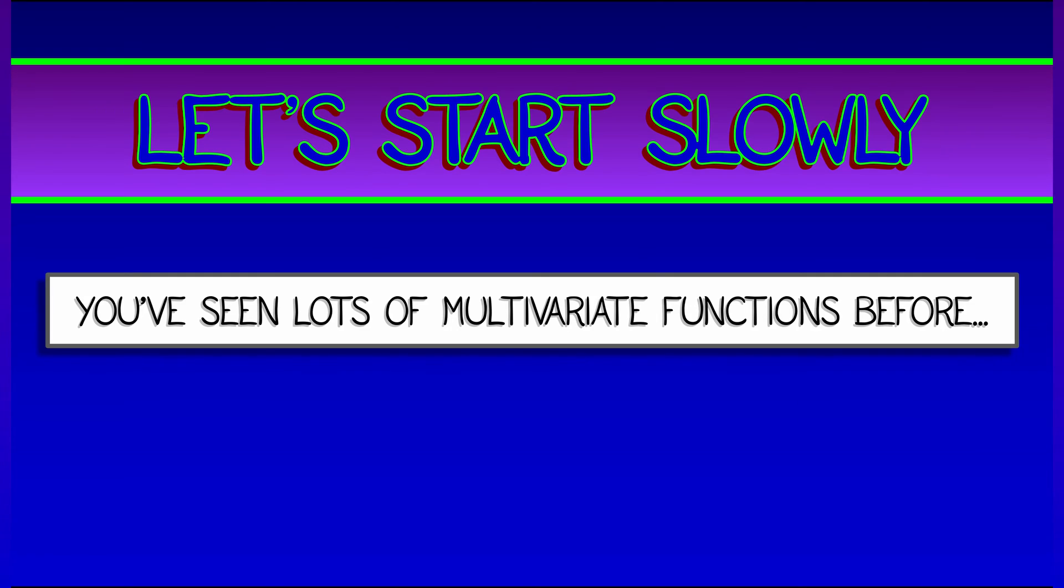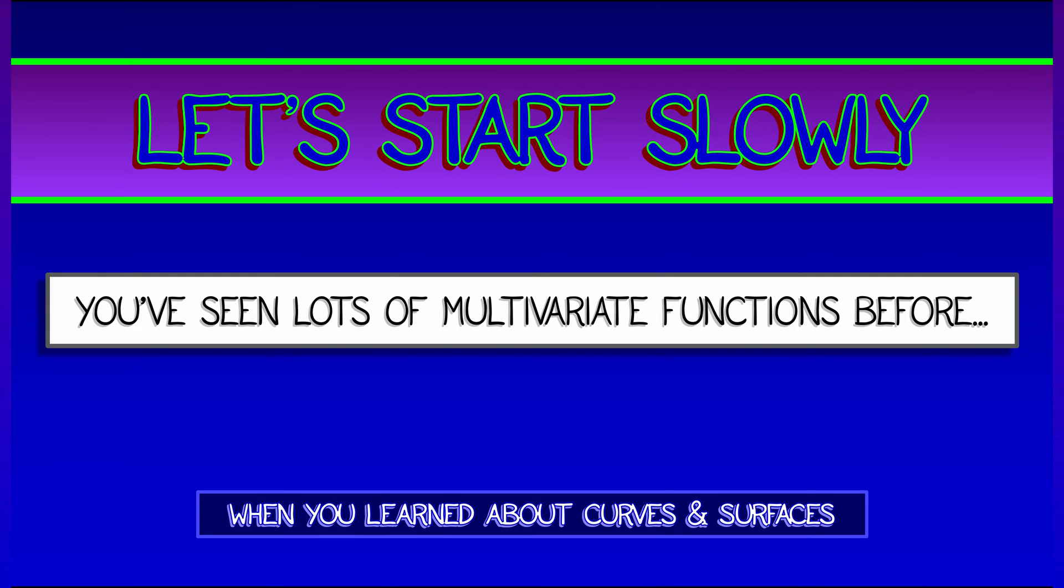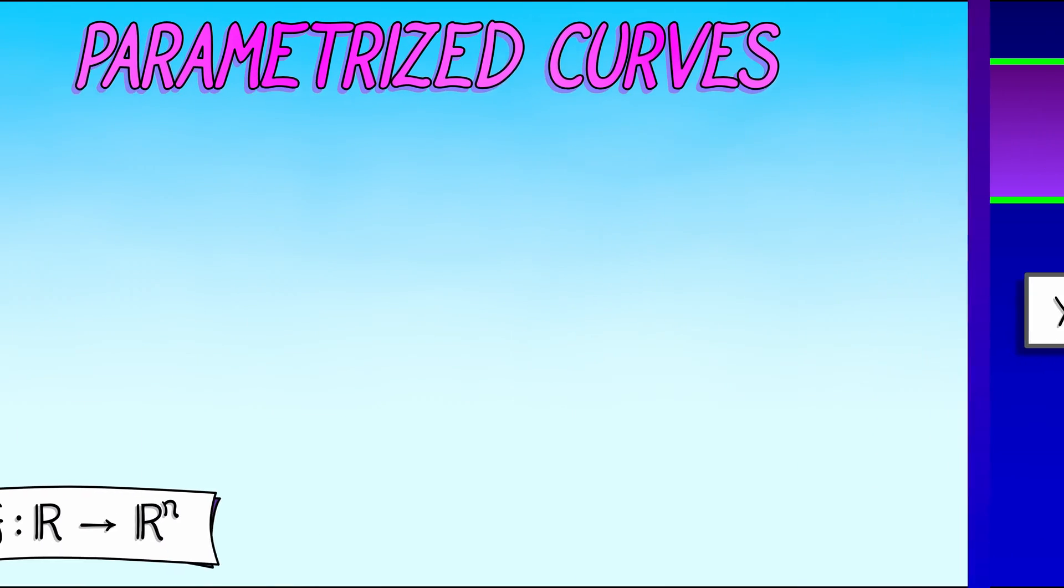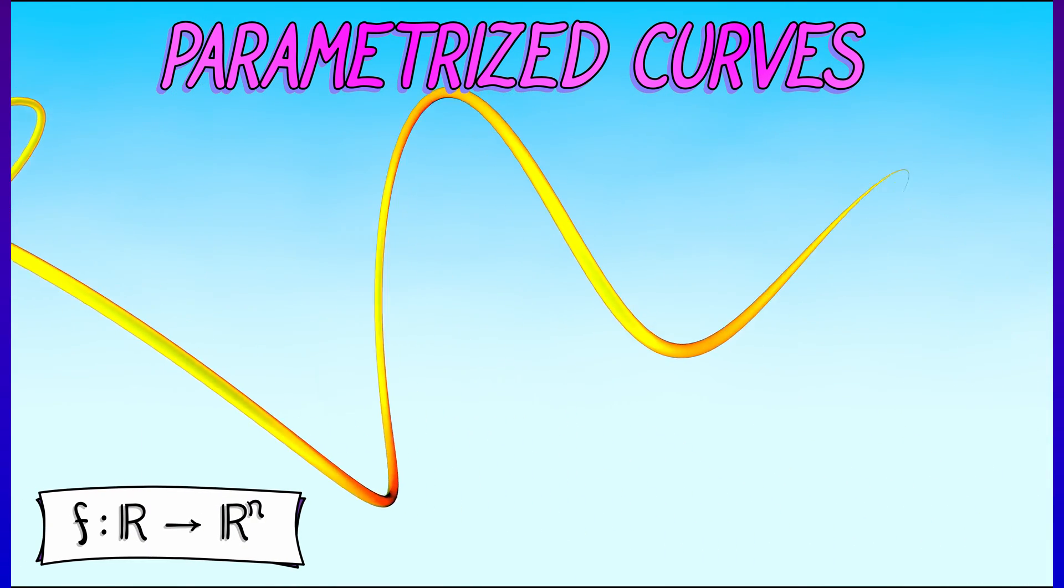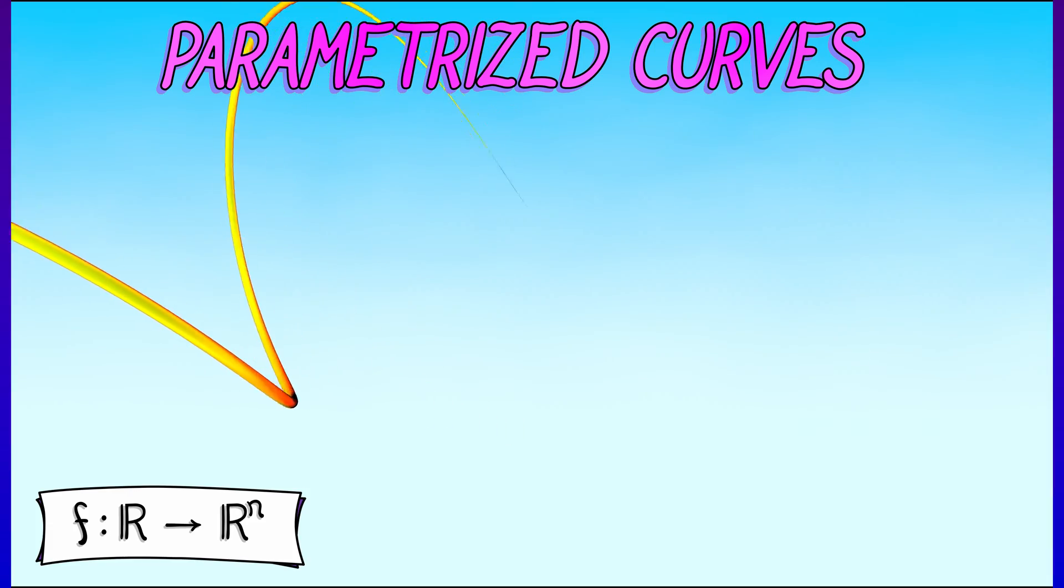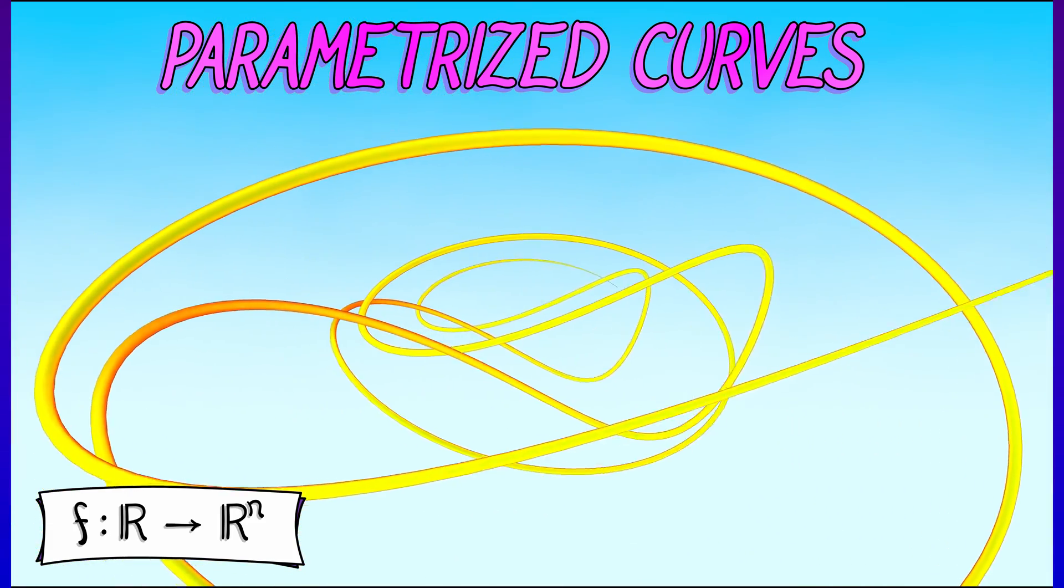All right, we're going to start off slowly, thinking in terms of multivariate functions we've seen before. Do you remember when you learned about curves and surfaces? We looked at parametrized curves, functions with one input, many outputs. Those were nice, made sense.